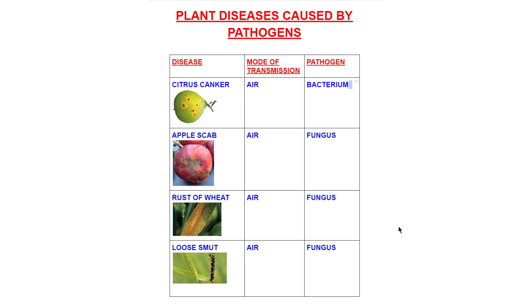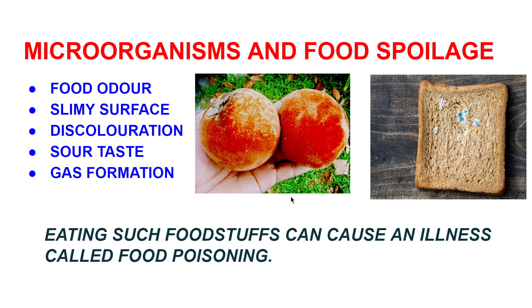Harmful organisms affect animals, human beings, and plants. Microorganisms are also responsible for food spoilage. Fungus grows on decaying plant or animal matter, and the same process spoils food. Symptoms of food spoilage include bad odor, slimy surface, discoloration — as seen on discolored tomatoes — sour taste, and gas formation. You can also see fungal growth on a bread slice. Eating such spoiled foodstuffs can cause illness, which is called food poisoning.